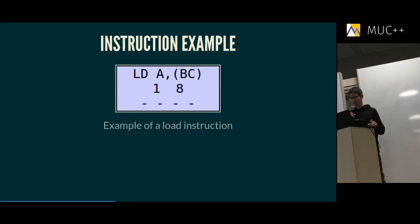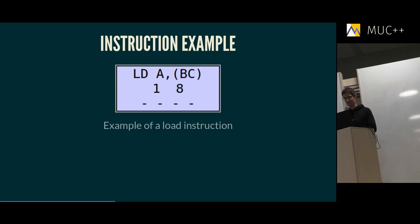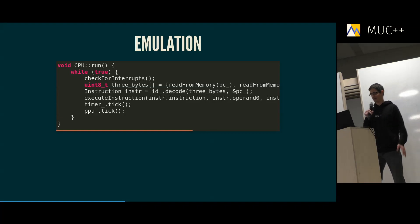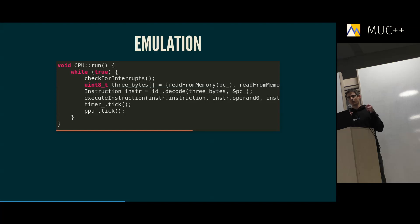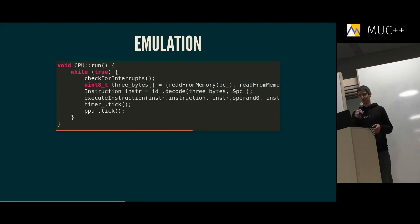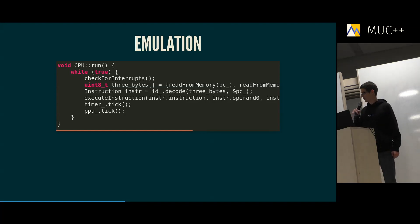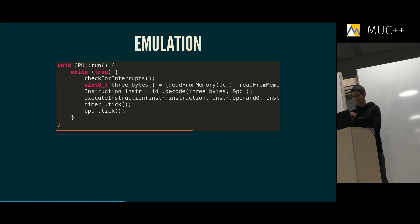So I started building my Gameboy from scratch by writing an emulator in C++. How do you write an emulator? Basically you write an endless loop that first checks for interrupts, loads instructions from memory (in this case from ROM), runs an instruction decoder that identifies which instruction it is and how many operands it has, executes the instruction, and then takes care of timing — adjusting your timer and PPU. The PPU is the picture processing unit, so you also have to ensure pixels are updated on screen.